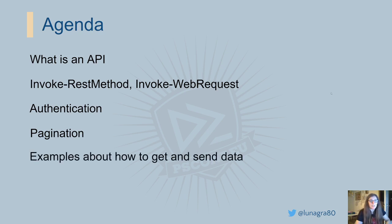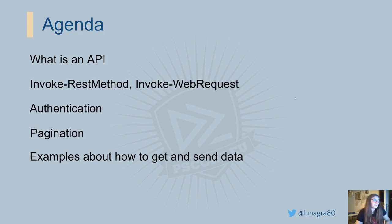A couple of examples of how to get and send data, why you will do it, and what you can use this data for. The APIs I will talk about are provided by third-party companies involving applications you may have heard about like Jira, Slack, and Trello. I will not talk about how APIs are developed themselves — it's purely how we can use them. And then we'll have a summary with some takeaways.